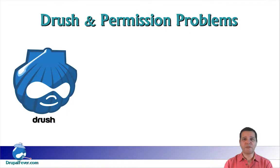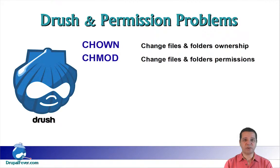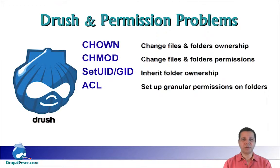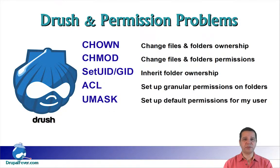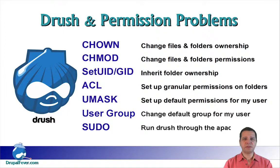Here's a list of tasks we will have to perform so Drush can play by Linux's rules. Number one, change files and folders ownership with chown. Number two, change files and folders permissions with chmod. Number three, use the setuid and setgid flags to configure folders so files created inside them will inherit their ownership credentials. Number four, use the ACL access control lists tool to configure persistent permissions on folders. Number five, alter the default umask for my user so every file created by me will allow group full access. Number six, change the default group for my user. And number seven, use a little sudo trick to run Drush through the Apache user.